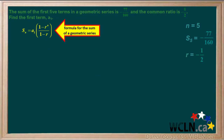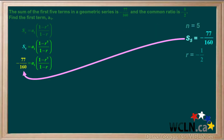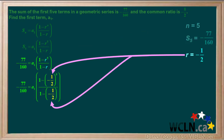We'll start by writing the formula for the sum of a geometric series. We need to put in the information we know and then solve for the first term, a1. Because n equals 5, we'll substitute both n's in the formula with 5. We'll put in negative 77 over 160 for the sum S5, and negative one-half for each r in the formula.